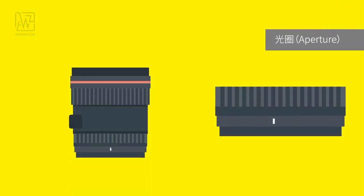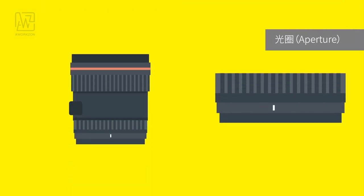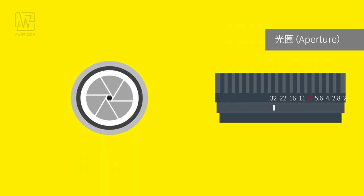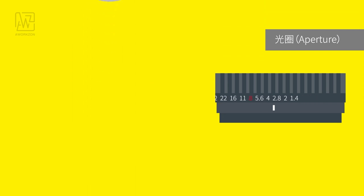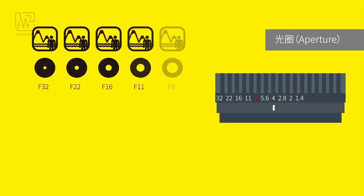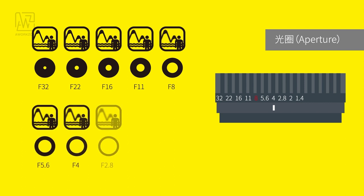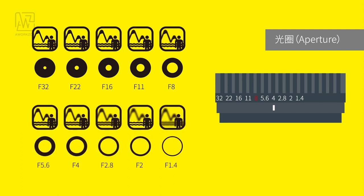Aperture refers to the size of the hole letting light in, represented by a parameter like f/5.6. These numbers can be seen on a camera lens. The smaller the f-value, the bigger the aperture and the more light intake. Aperture not only affects exposure but also depth of field. A bigger f-value means a bigger depth of field — little difference in clarity between the photo's foreground and background. A smaller f-value means a smaller depth of field.